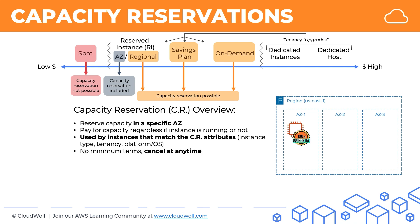There are no minimum terms and you can cancel at any time. And importantly, keep in mind this for the exam: there's no separate billing discount for capacity reservations. In order to get a discount, you need to combine your capacity reservation with regional or savings plan. So if you use capacity reservation on-demand, you'll effectively just be paying the on-demand price for that capacity whether you have an EC2 instance running or not. There are no discounts for that.